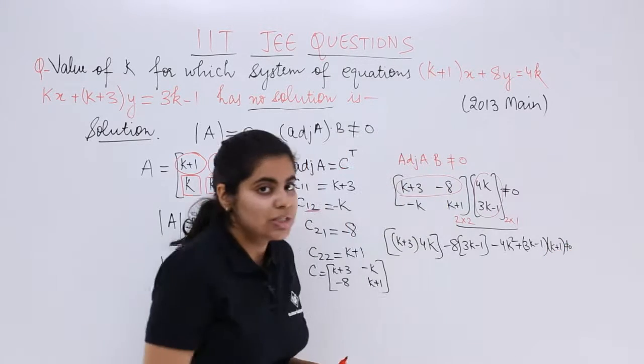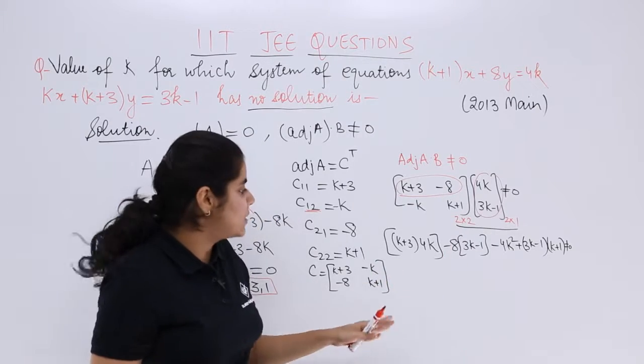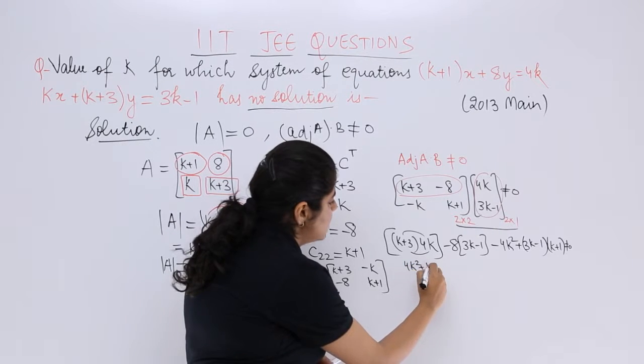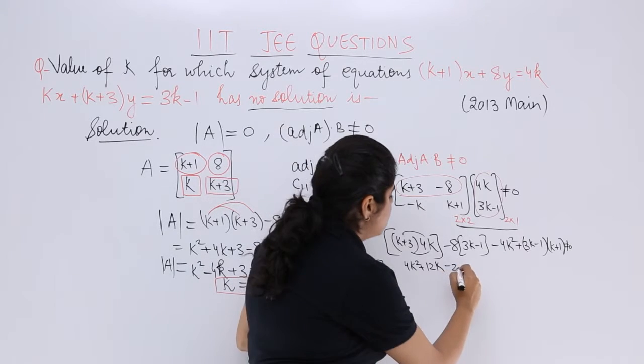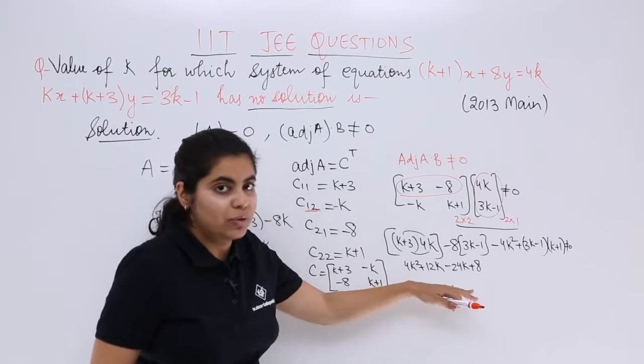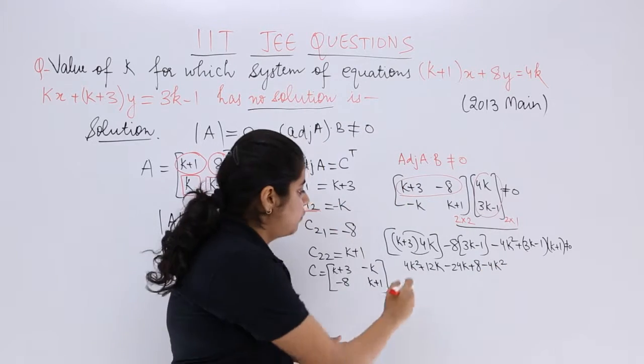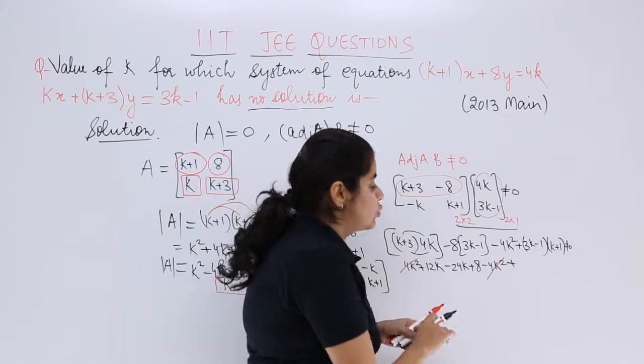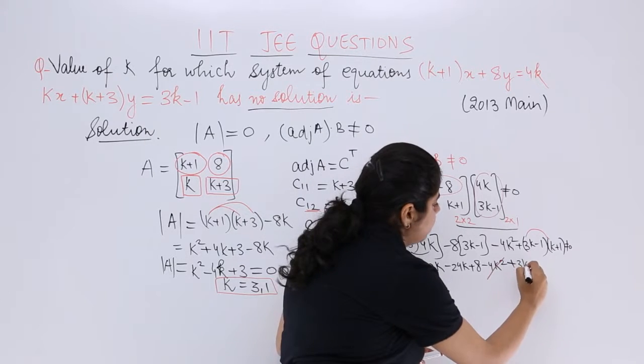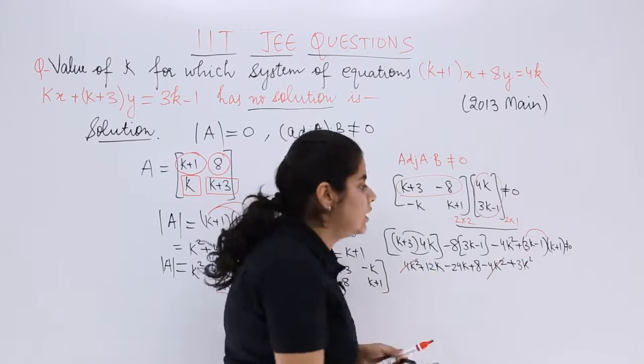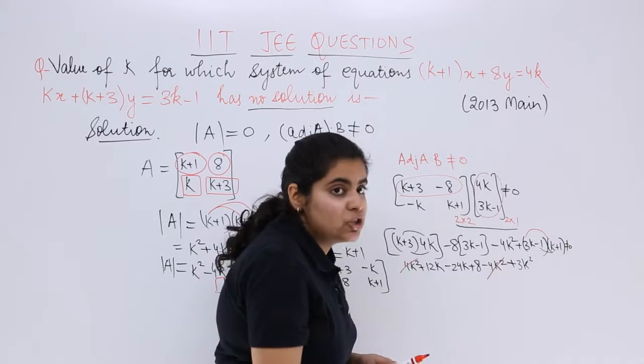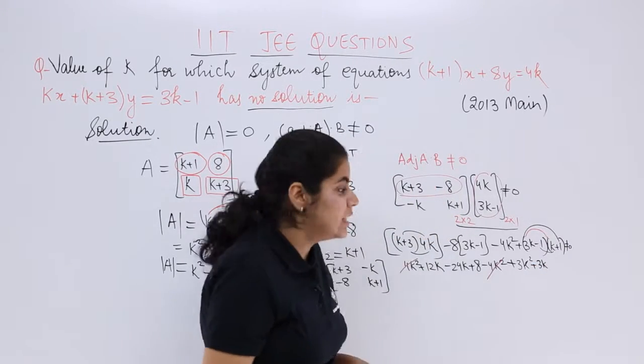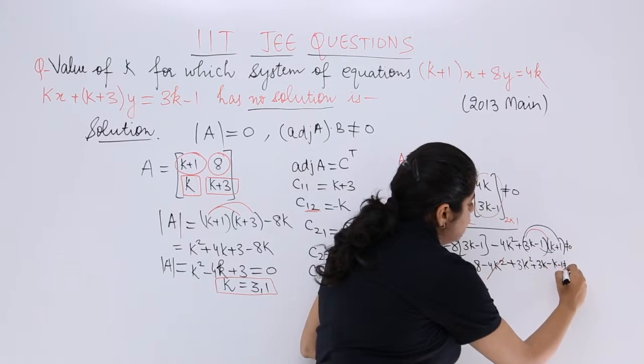This is simple multiplication. 4k² + 12k - 24k + 8 - 4k². The 4k² terms cancel. It's 3k×k = 3k². Then -1×k. Or: 3k×1 = 3k, then -k-1, not equal to 0.